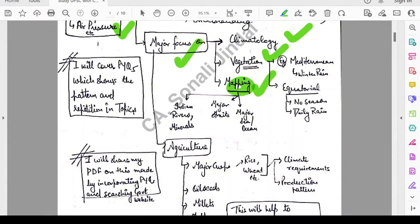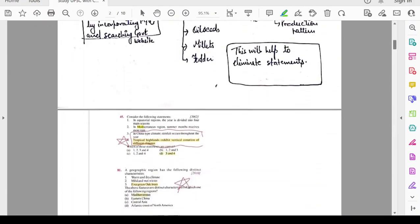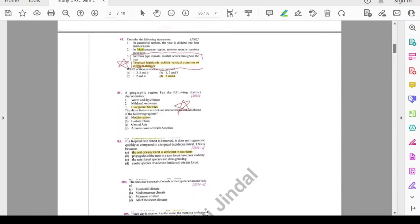In Mapping, you need to cover Indian rivers, minerals, major straits of world, major seas and ocean. For vegetation, I will show you a few of the questions that will show you how repeatedly UPSC is asked on this topic.